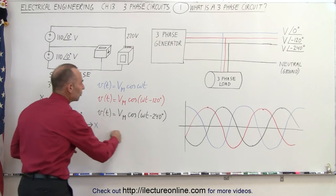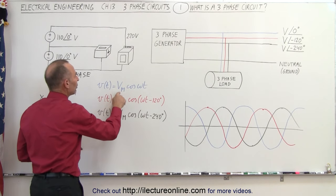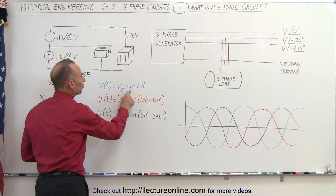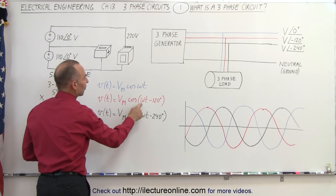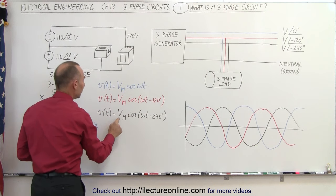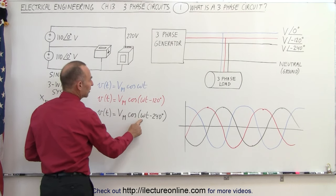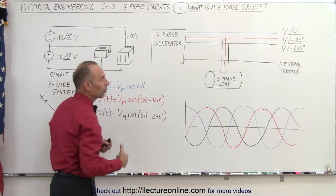We can write equations describing the voltage as a function of time, so we have maximum voltage times the cosine of omega t for the first one, the maximum voltage times the cosine of omega t minus 120 degrees for the second one, and the maximum voltage times the cosine of omega t minus 240 degrees for the third one.